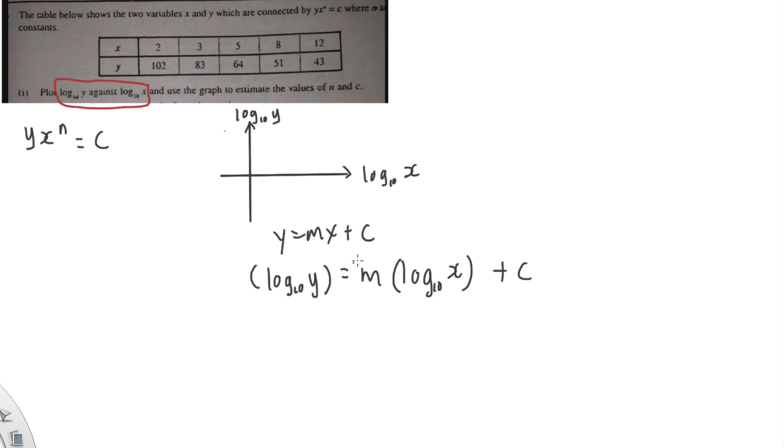So now my objective is I want to change this equation into this formula. Alright, obviously my m and c later will maybe become the n and c over here. Okay, so how to do like this because I must have the log 10 formula.